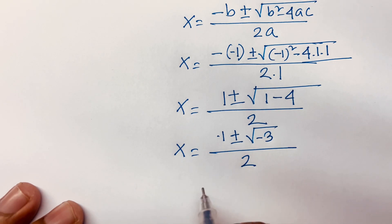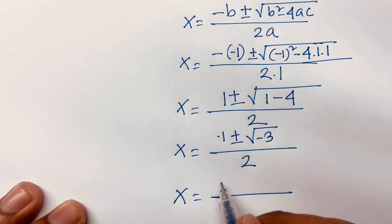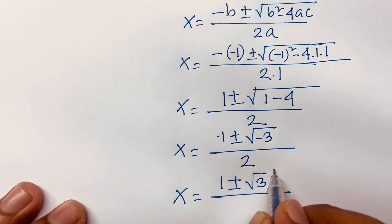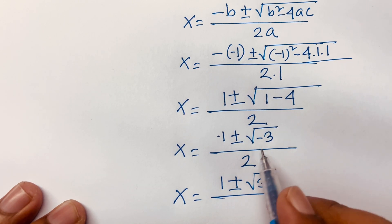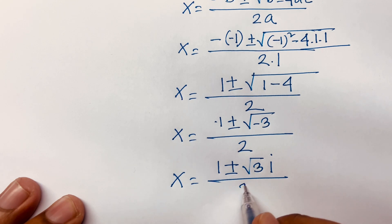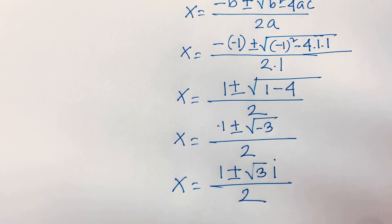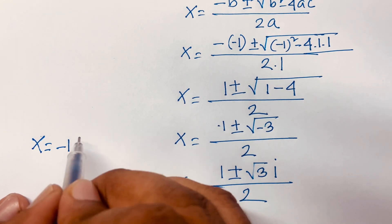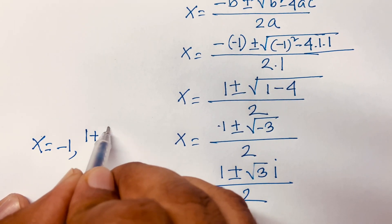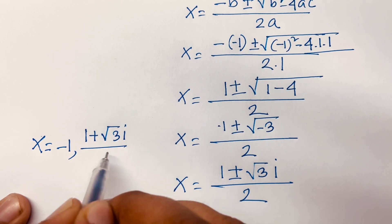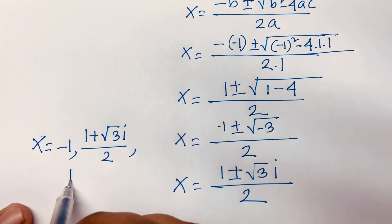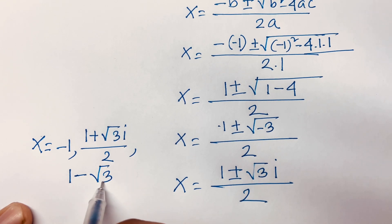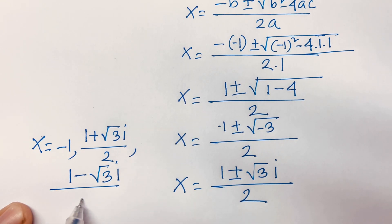Now the value of x is equal to 1 plus or minus square root of 3 times i, because we know that i² is equal to minus 1, all over 2. So our final answers are: x is equal to minus 1, x is equal to (1 plus square root 3 · i) over 2, and x is equal to (1 minus square root 3 · i) over 2.